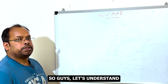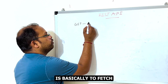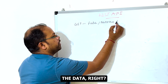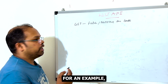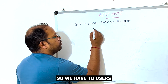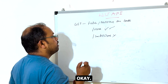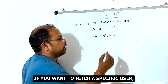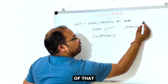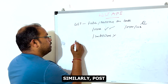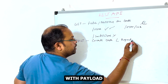Let's understand the different HTTP methods in more detail. GET is basically to fetch or retrieve data. In the resource URL, we should use nouns instead of verbs. For example, to fetch users, use /users — not /getAllUsers, that is not good practice. To fetch a specific user, use /users/123 where 123 is the ID of that user.